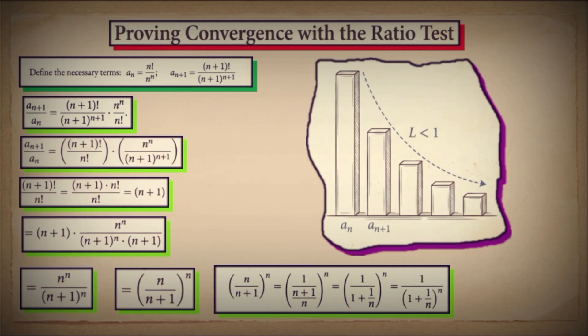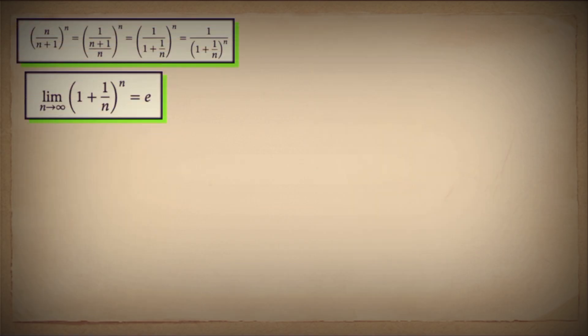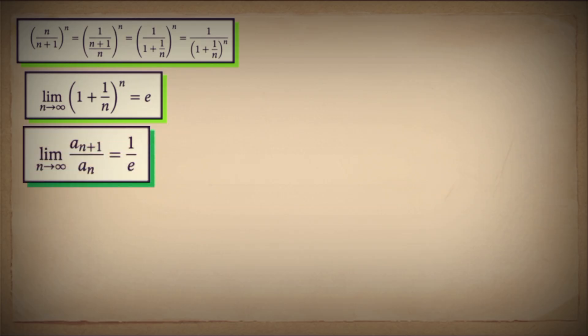Rewriting, this is n divided by (n+1), all raised to the power of n — or equivalently, 1 divided by (1 + 1/n), raised to the power of n. This denominator should look familiar. This is one of the fundamental definitions of Euler's number e. Therefore, as n approaches infinity, the ratio a sub n+1 over a sub n approaches 1 over e.